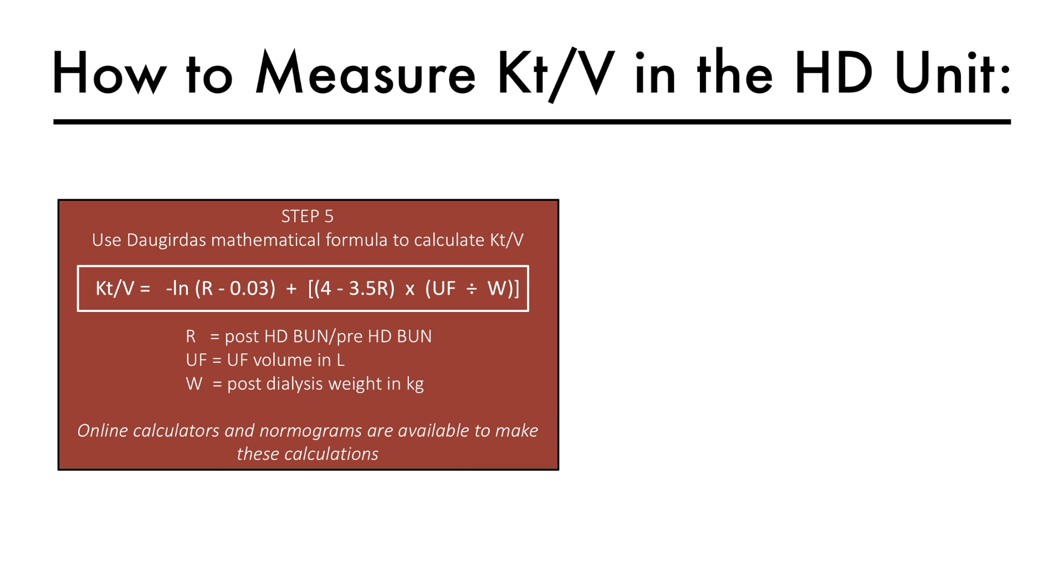KT over V obtained by this method is the non-equilibrated KT over V, also called single pool KT over V. Urea rebounds post-dialysis and reaches steady state 30 to 60 minutes after the end of the dialysis treatment. A post-dialysis BUN drawn at this time more accurately represents the true post-dialysis blood urea level. KT over V calculated using this value is called equilibrated KT over V.